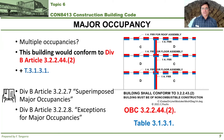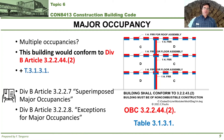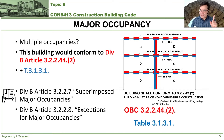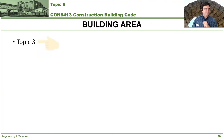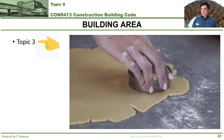Another thing I'd point you to is Articles 3.2.2.7 and 3.2.2.8, which deal with superimposed major occupancies and exceptions to major occupancies. You should check these out because they're important.